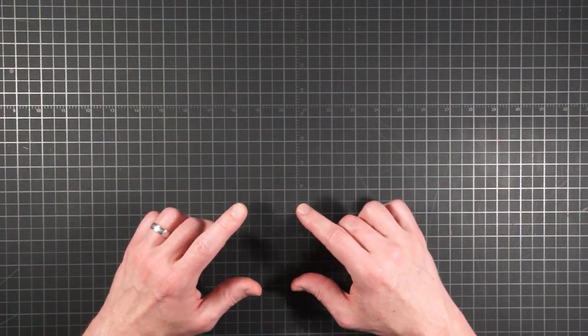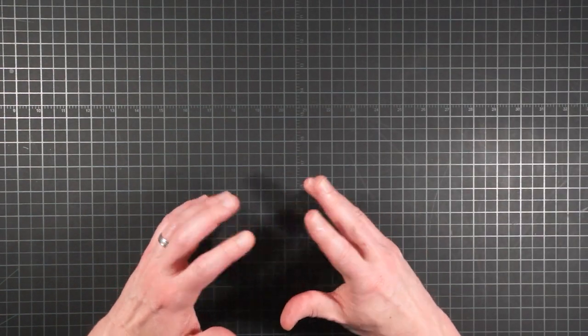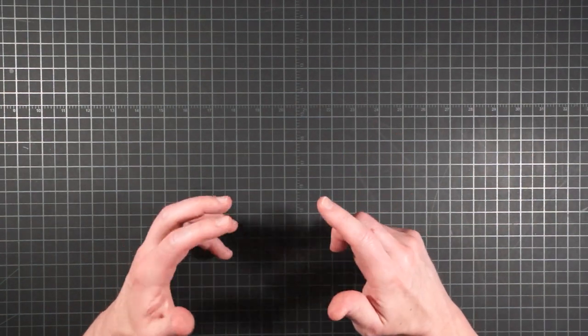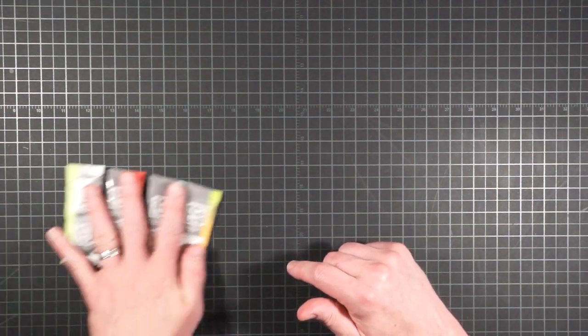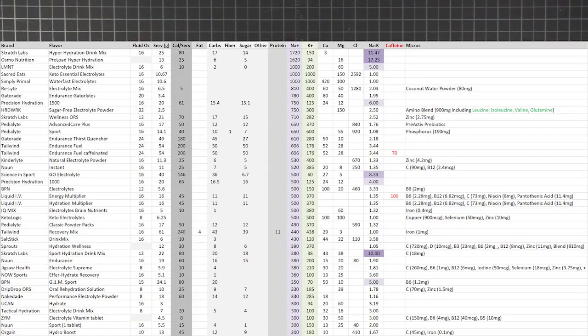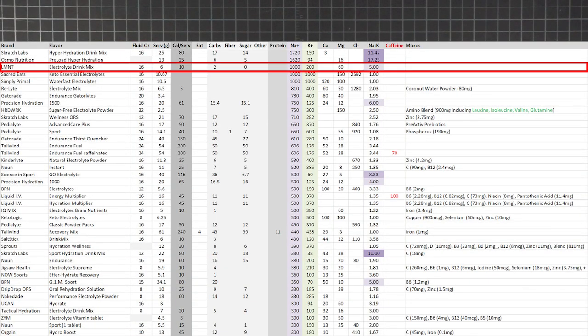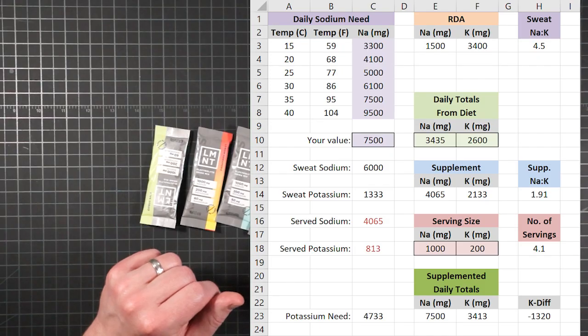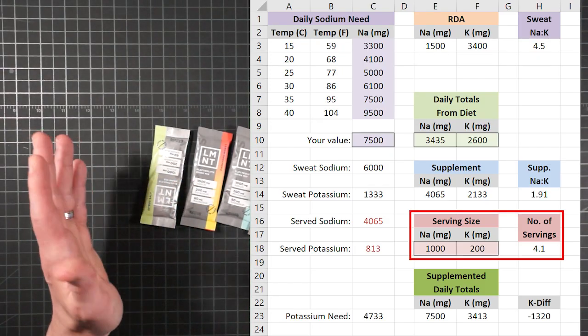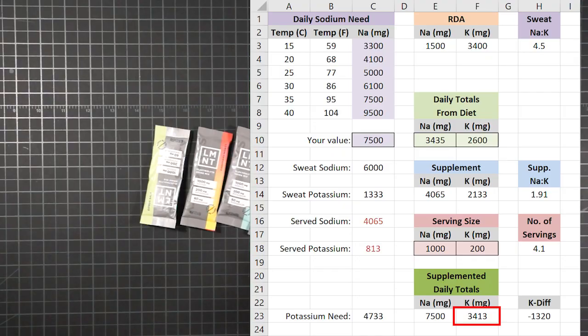So if you're at all uncomfortable with that, the benefit of the chart is that it lets you pick your own tolerances. So as a compromise, choose something like these element packages. They're still pretty potent at a thousand milligrams of sodium, but the NAC of 5.0 is a lot closer to actual sweat. You'll need four packets a day, but they put your potassium back in the recommended window.